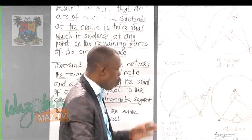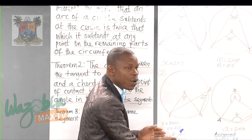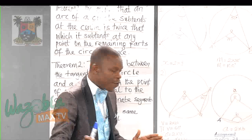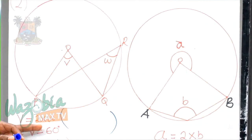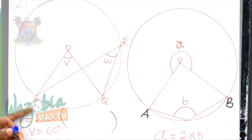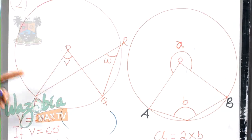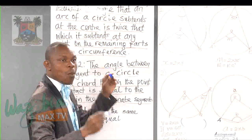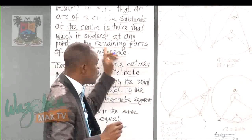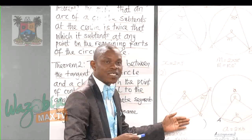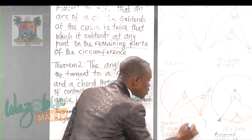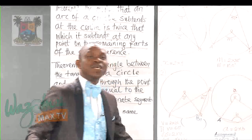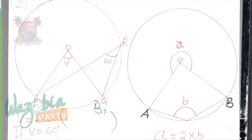For theory purposes, what we've written here — V equals 2W — if you are solving a theory problem, make sure you put beside that equation the reason why you said V is equal to twice W. The reason is this very theorem. The short form is: angle at the center of a circle is twice the angle at the circumference. By putting that, you are going to earn a B1 mark — that's called an independent mark.